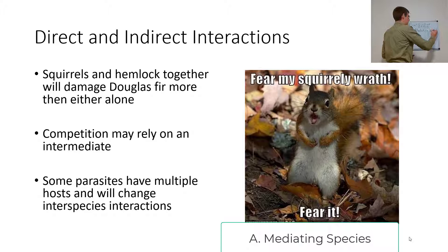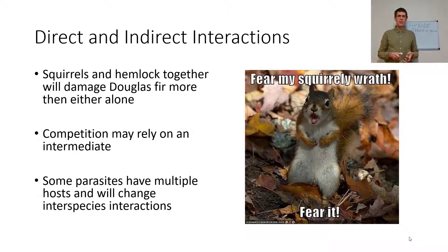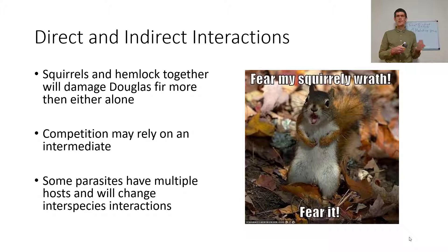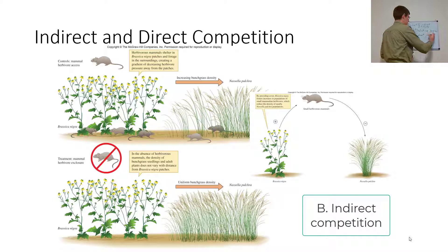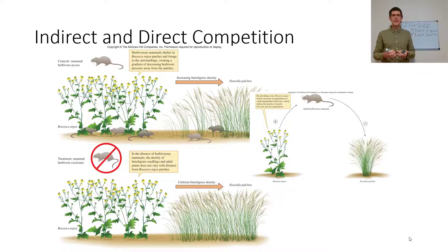Take for another example: parasites with multiple hosts. Certain parasites may indirectly affect competition. Remember the Tribolium castaneum and Tribolium confusum example from competition? What's happening there is there was a parasite more common on one than the other, and that parasite managed to change the reproductive rate of one species such that the other could attain priority effect. You can see this too with indirect and direct competition — how the presence of a predator can actually mediate the competition interaction.